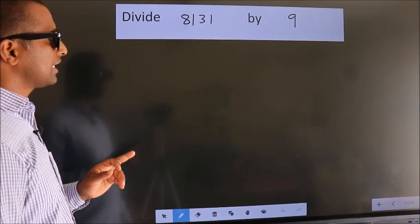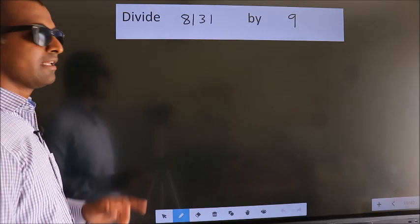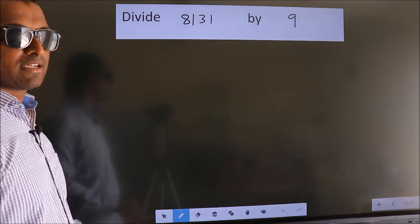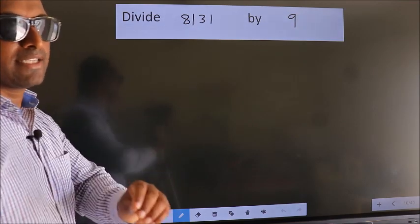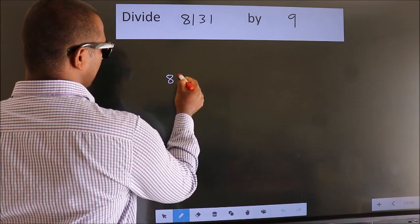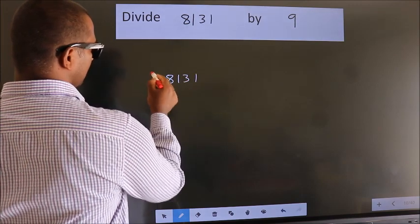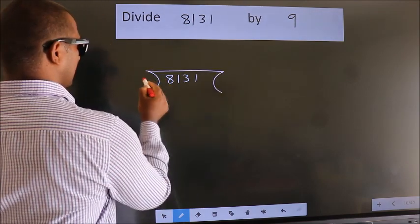Divide 8131 by 9. To do this division, we should frame it in this way. 8131 here, 9 here.